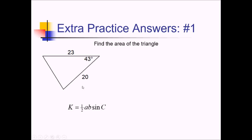So that's one half, and we'll have 23 times the B value, 20, and A and B are interchangeable here. And then we'll multiply by the sine of that angle, 43. And now we need the calculator.